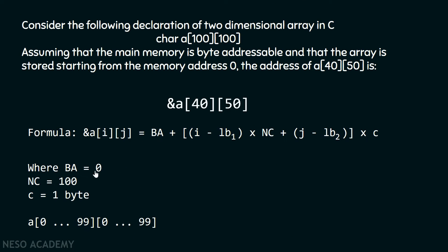In our example, base address is zero as the starting address is zero. Number of columns is 100. c is the size of character in bytes. As it is not given in the question, we assume it is one byte — this is the universal assumption. If the size of the data type is not given, take the universal assumption: character size is usually one byte. As index starts from zero, the lower bound of the row is zero and upper bound is 99. Similarly, the lower bound of the column is zero and upper bound is 99.